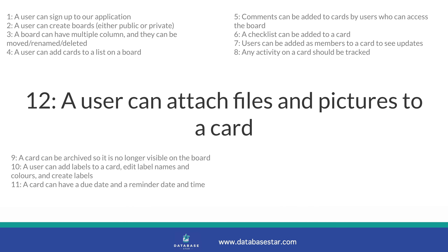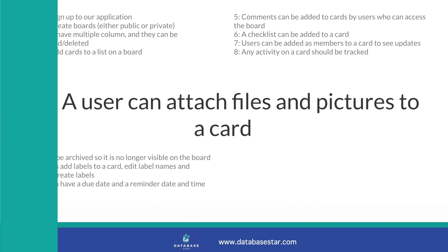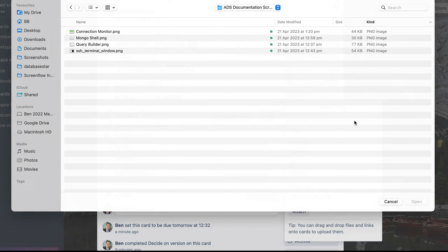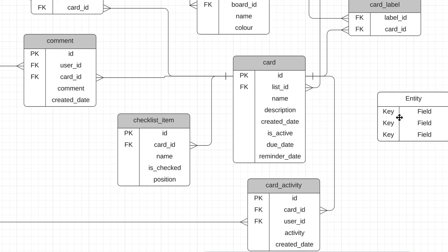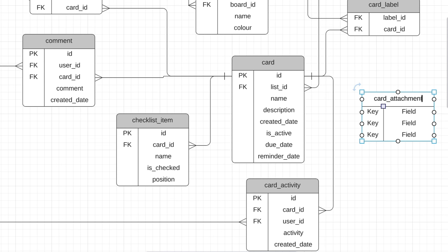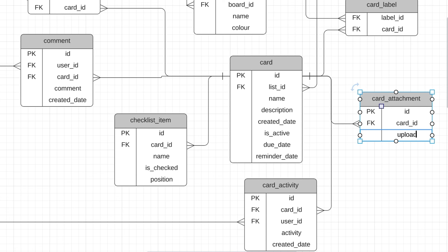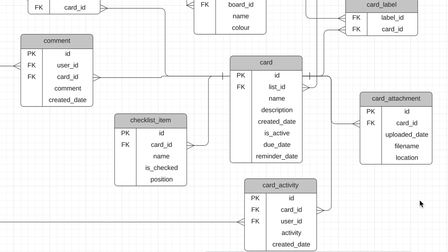The final requirement number twelve is the ability to attach files and pictures to a card. In our design we'll add a new table called card attachment with an ID column, a card ID to relate the attachment to a card, an uploaded date column, a file name so we can display the file on the card, and a location field so we know where the file is stored. This could refer to a path to a directory on a server or storing the file in the database, depending on how you want to implement the solution.